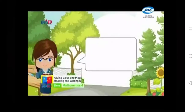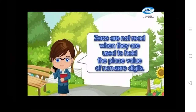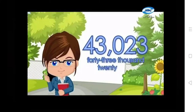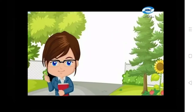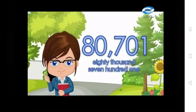Zeros are not read when they are used to hold the place value of non-zero digits. For example: 43,023 and 80,701.